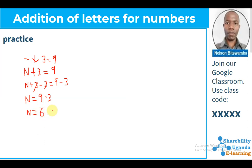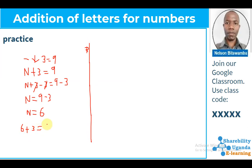We have finally got our missing number. The answer is 6. That means if we had our 6, then 6 plus 3 should give us 9. And indeed it does. This is how we solve these kinds of problems.